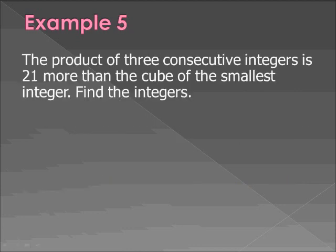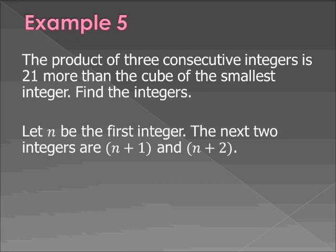All right. Example 5. The product of three consecutive integers is 21 more than the cube of the smallest integer. Find the integers. All right. So the first thing you want to do is attempt this yourself. Because I think you have enough knowledge and ability to do this. So try this one yourself. All right. The first thing you have to do is label what each variable is. So let's call n the first integer. The next two integers are n plus 1 and n plus 2. I hope that makes sense. So if you call n the first integer, the next consecutive integer is one more than the first. And the next one after that is one more than the second or two more than the first.